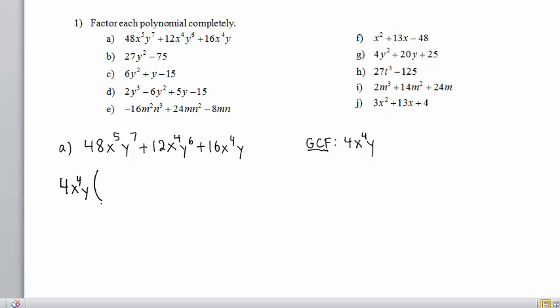We factor that out. 4 times 12 would give us 48. x to the fourth times x would give us x to the fifth. y times y to the sixth would give us y to the seventh. 4 times 3 would give us 12. x to the fourth times 1 would be x to the fourth, so we don't need to write the coefficient 1. y times y to the fifth would give us that y to the sixth.